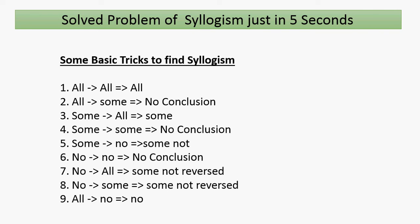The next trick: if the first statement has 'some' and the second statement's first word is also 'some', then there is no conclusion. The next trick: if the first statement has 'some' and the second statement's first word is 'no', then the conclusion is 'some not'.